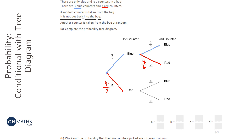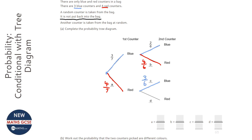If I picked a red the first time round, what's the probability I'll pick a blue? There are still three blue counters in there, but there are only six left altogether — because we've already picked a red.